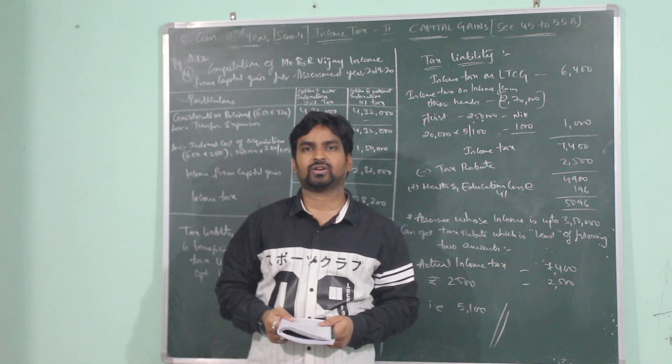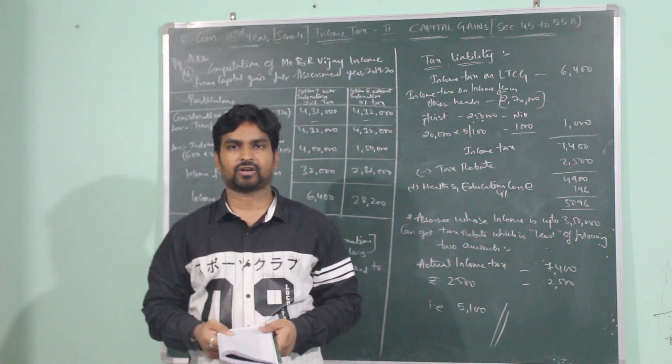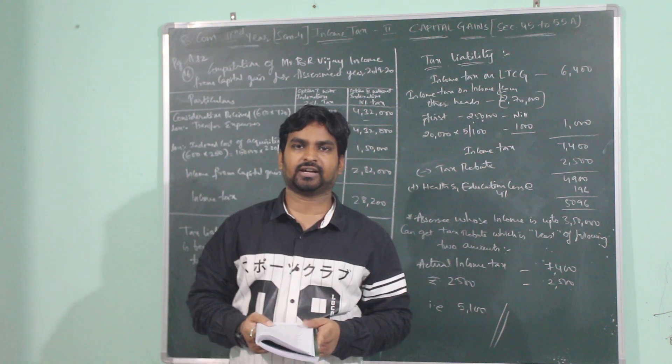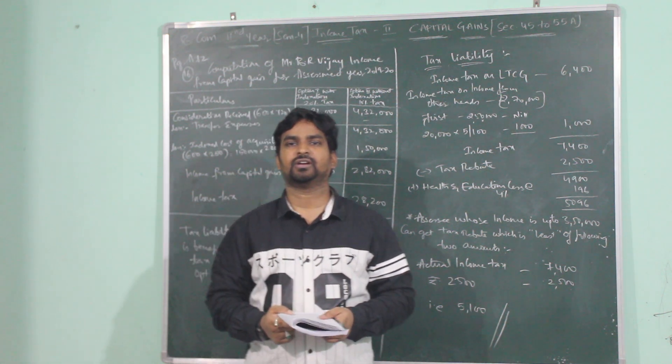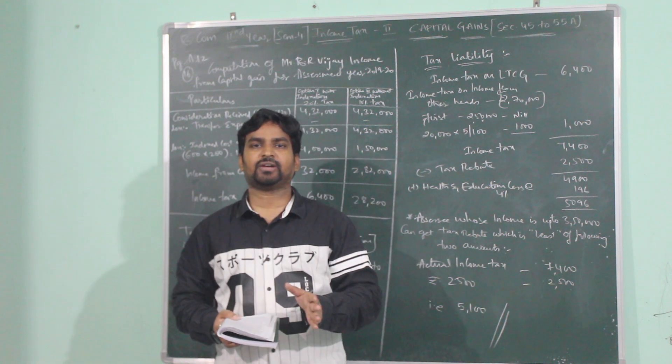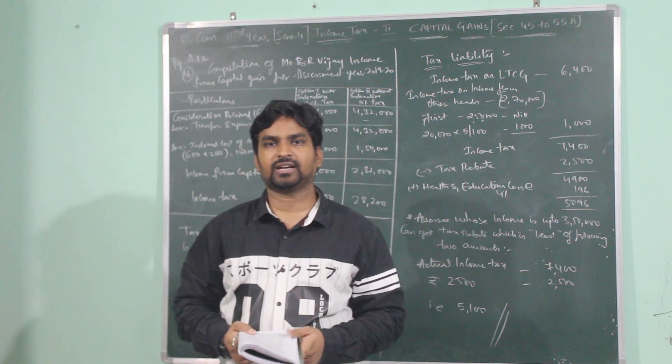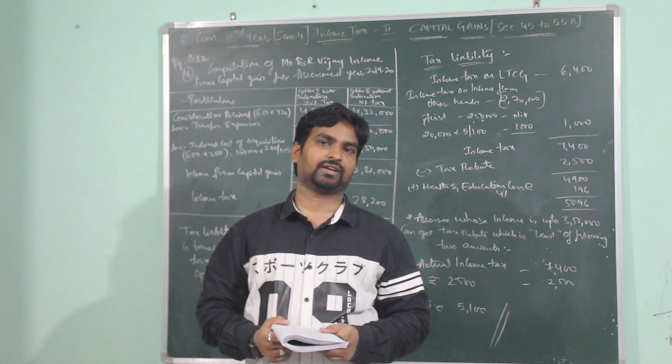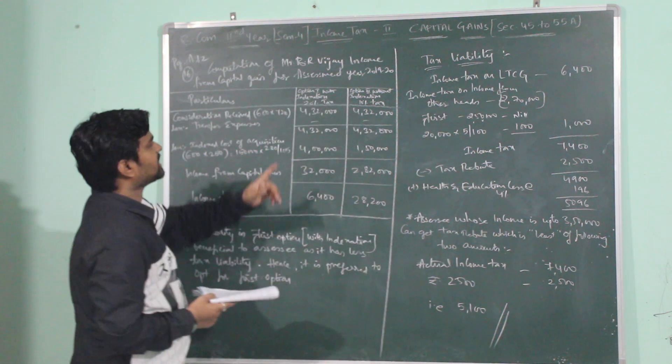Now we will be solving when these listed equity shares are sold in an unrecognized stock exchange. Here the assessee has 2 options: 1 to pay tax at 20% with indexation or to go for tax at 10% without indexation.